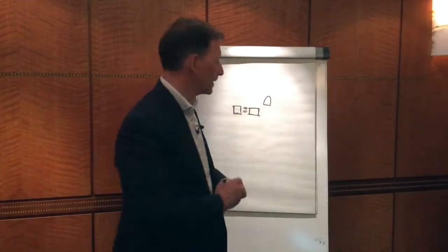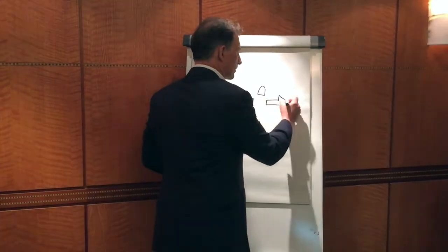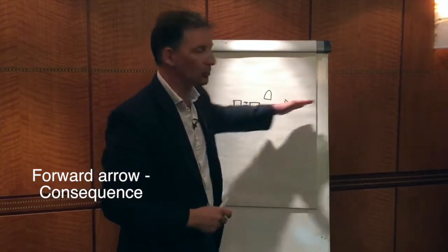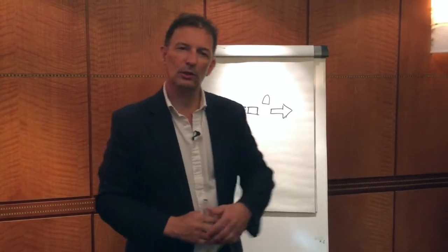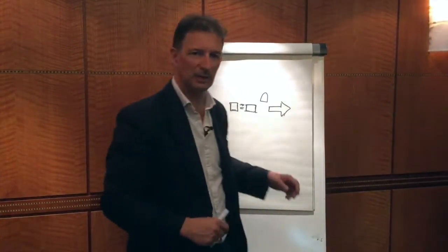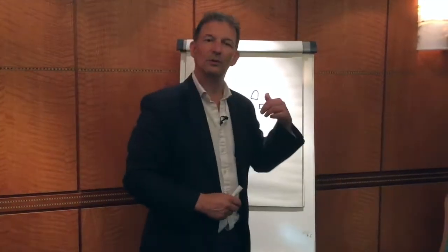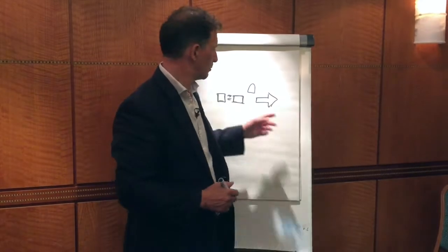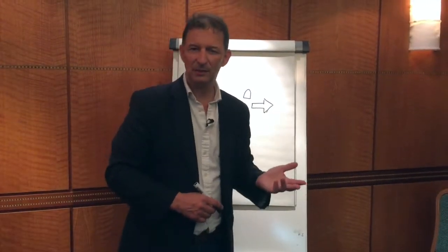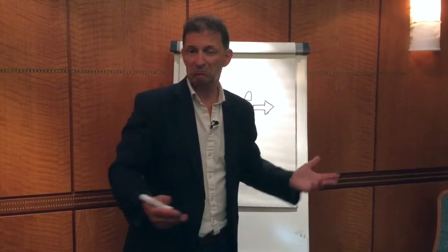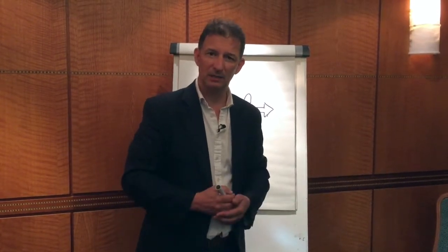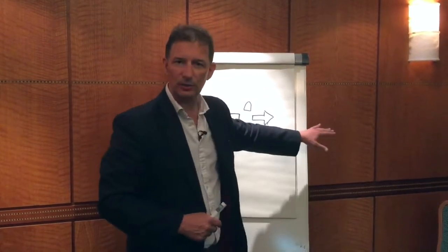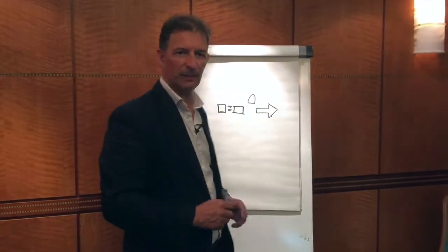The next pattern is symbolized by a forward-pointing arrow, and this is consequence. We're highlighting the consequence of a certain belief. So you might say: 'If you believed that if it was raining then it was wet and you couldn't go out, what would be the consequence? That every time it rained you'd stay in and not do anything. What kind of life would that be?' We're using consequence to reframe the belief.